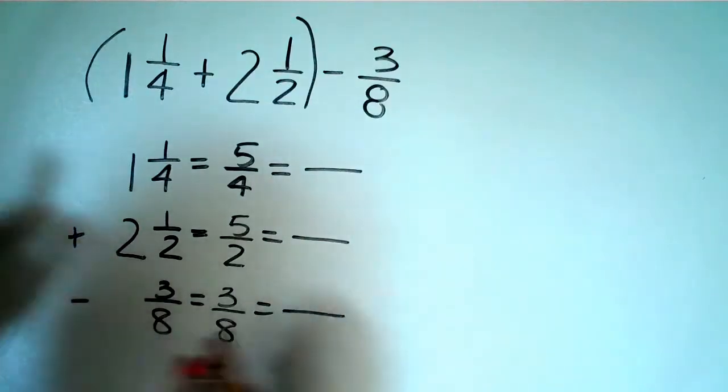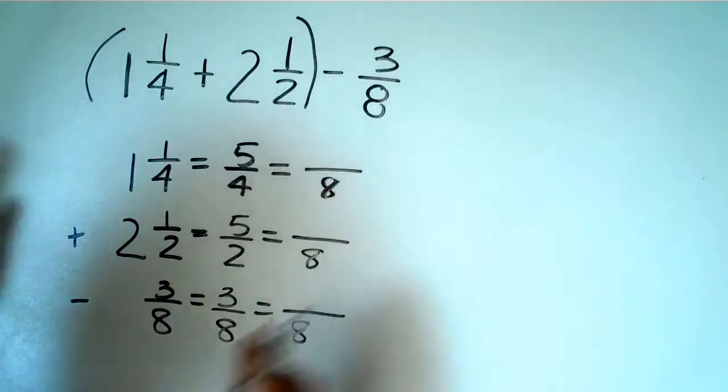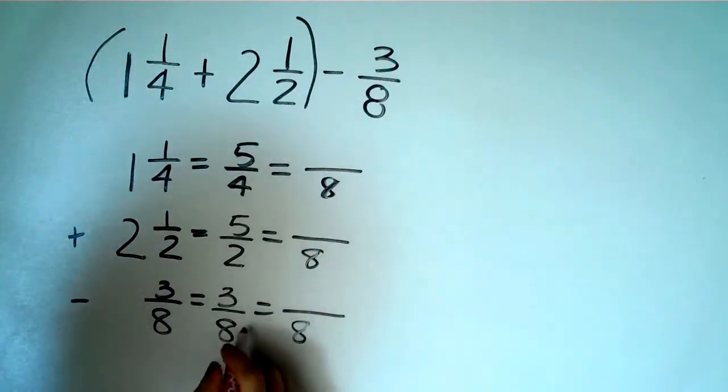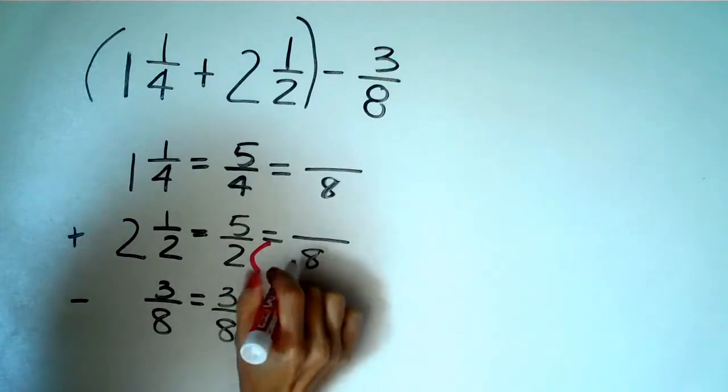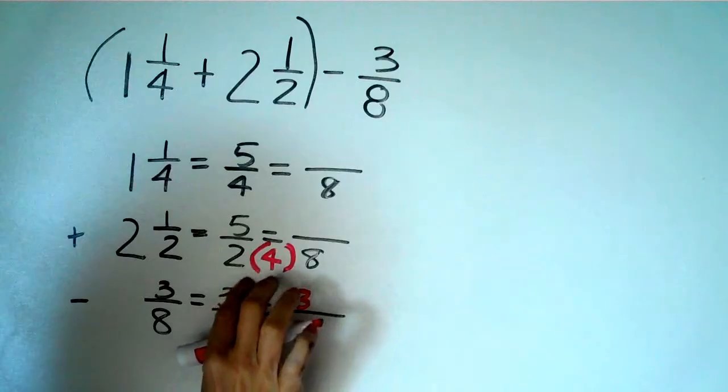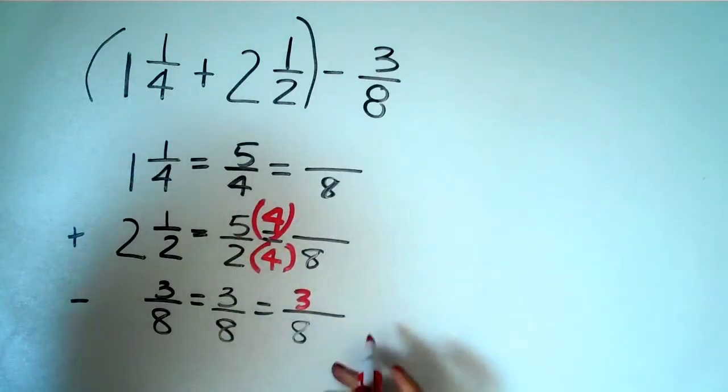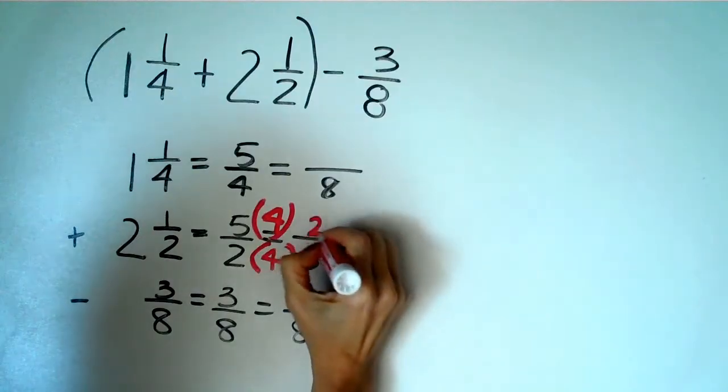So I can use eight as my common denominator. And I don't have to do anything on the bottom number here. Three over eight equals three over eight. Over here, I have to go from two to eight. I would be multiplying by four. So I'd have to do the same on the top to find an equivalent fraction. Five times four is twenty.